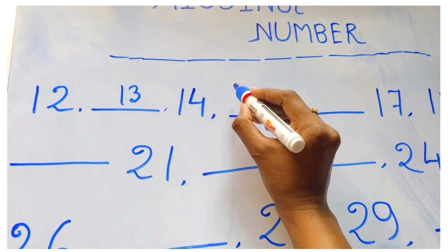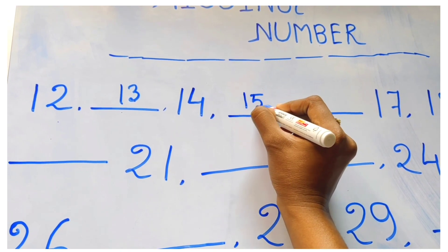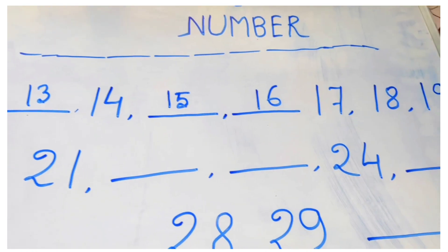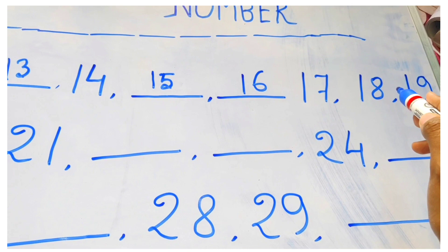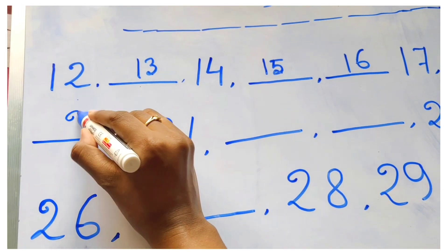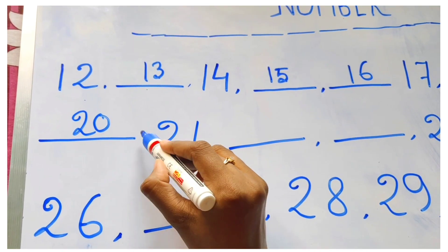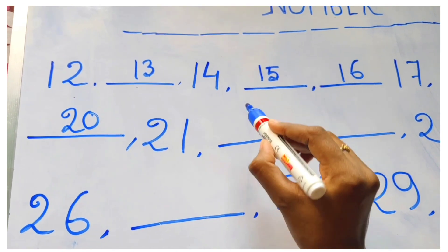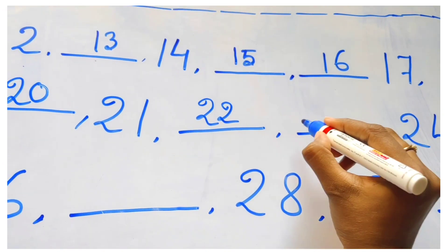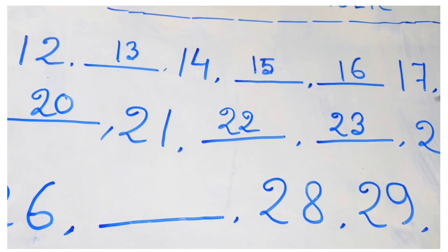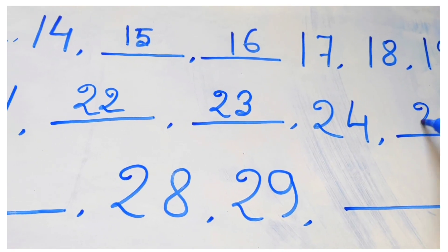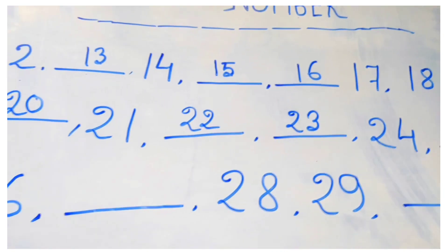Here I write, yes, fifteen. Next, sixteen. Very good. Then seventeen, eighteen, nineteen, then twenty. Good. Twenty-one. Then twenty-two. Very good. Next, twenty-three. Then twenty-four.